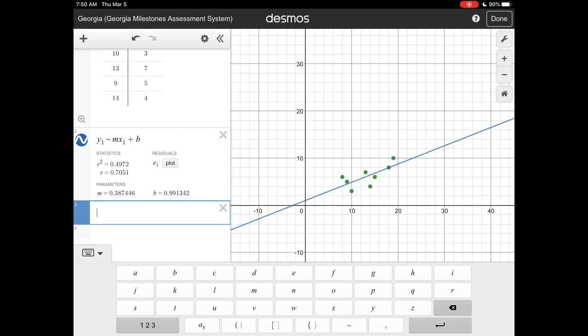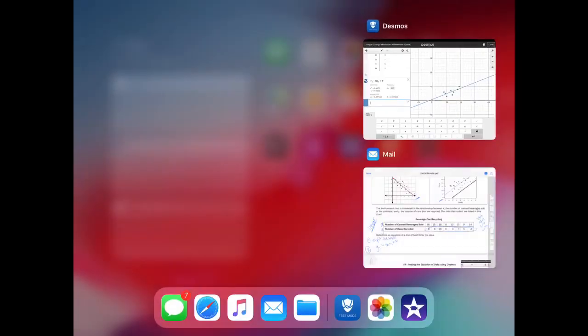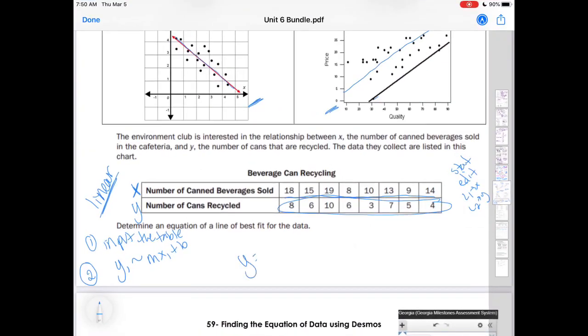Let's just say 0.4 is my slope and 1 is my B, so my equation would be Y equals 0.4X plus 1.